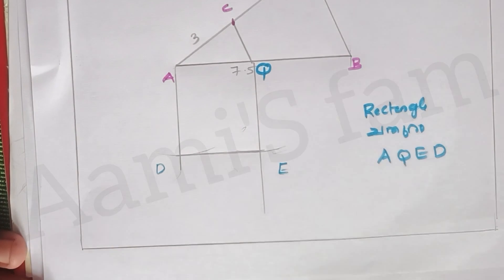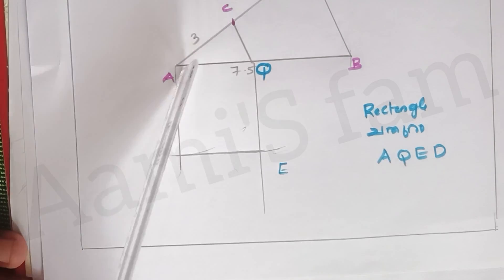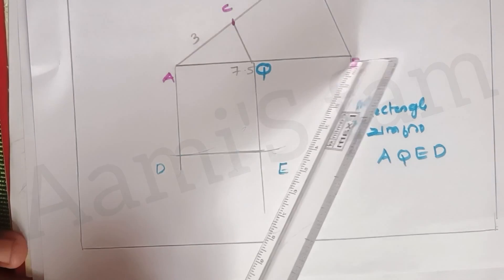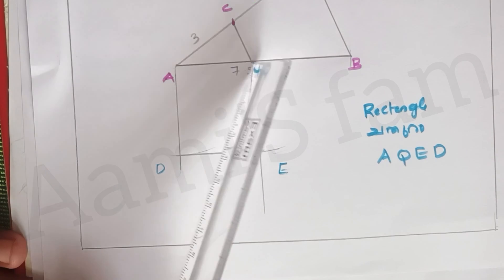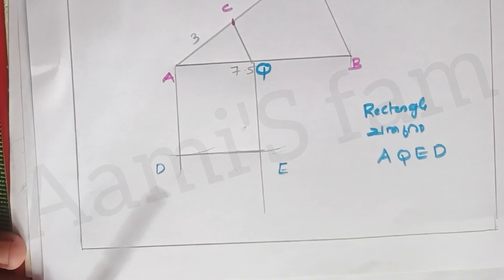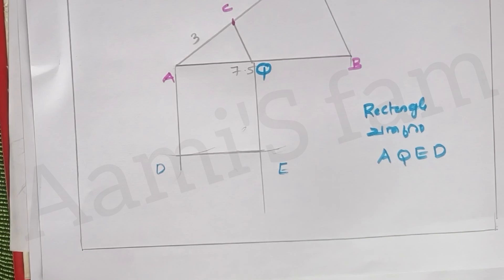AQED is called a rectangle. What is the ratio? 3 to 4 — AQDE is called AQDE. That's a ratio of QEAD, that's a ratio of 4.